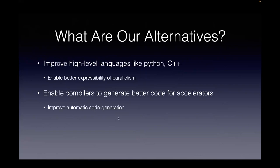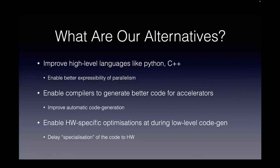If you can improve automatic code generation and enable the language to better express parallelism, you'll start getting better, more maintainable code that can be converted into higher-performance lower-level code more easily. Third, the details of hardware-level specifications and hardware-specific optimizations should not be done at the higher-level languages like Python or C++. Things like specifying how many threads to use, how many thread blocks, which synchronization primitive — those should be left to lower-level code generation. You delay specialization of code to the hardware and don't do it at the higher level.